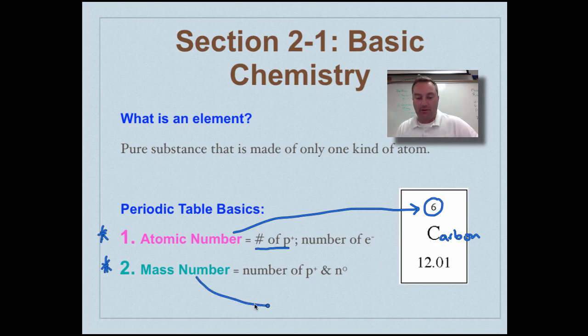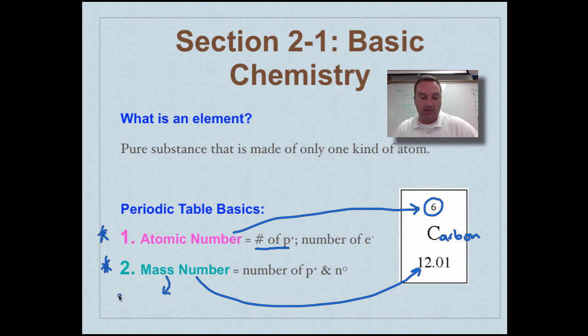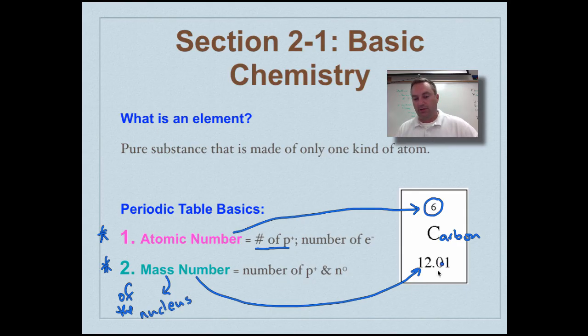Now the mass number, which is this larger number down here, this is the number of protons and neutrons. So this is going to be pretty much the mass of the nucleus. Now you see this .01 in here? They're taking into account the isotopes. So it's sort of a weighted average for the nucleus. We're just going to kind of round up. So we have 12 protons and neutrons inside the nucleus and we have an atomic number of six.